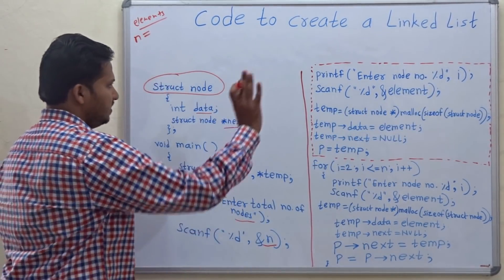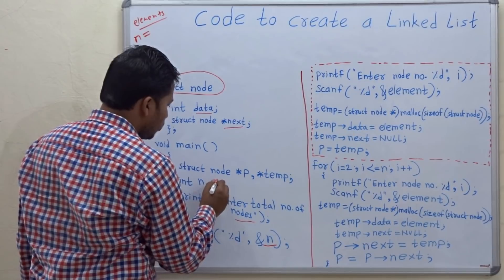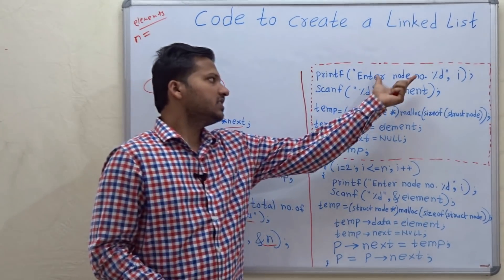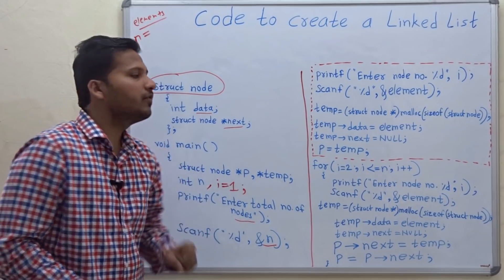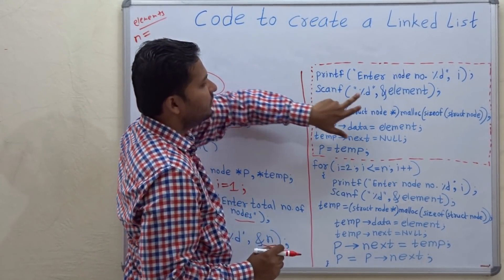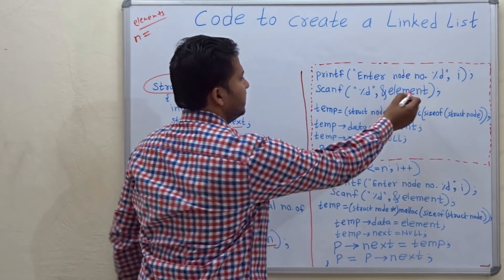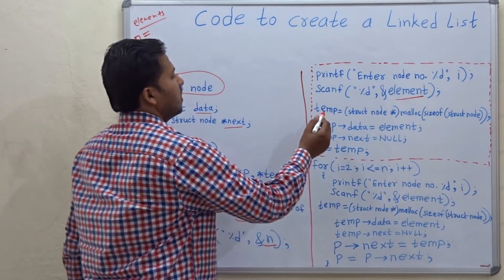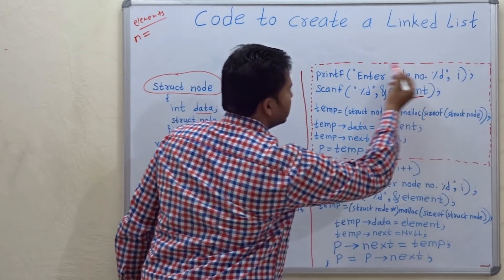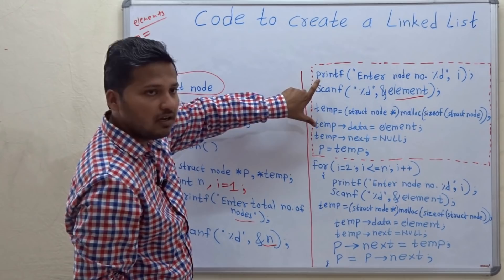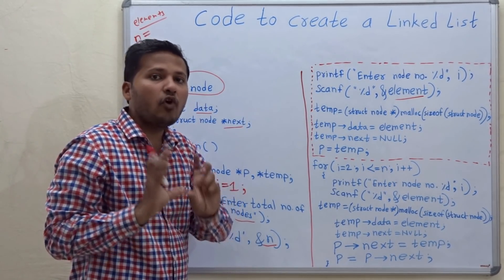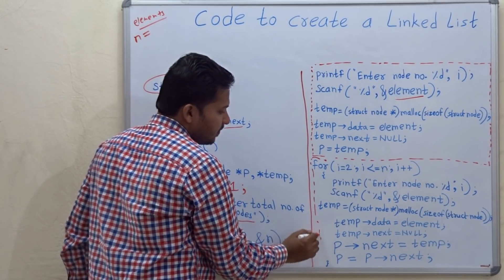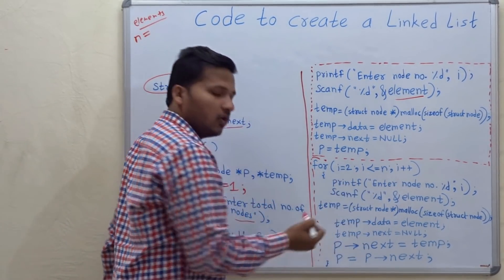Now printf 'node number %d' where i starts from 1, because this is the statement to take the first node. scanf reads the element into the variable 'element'. For the first node in the linked list you have to create that single node separately — you should not take it in the for loop. You write that separately, and for all other nodes you write the for loop.